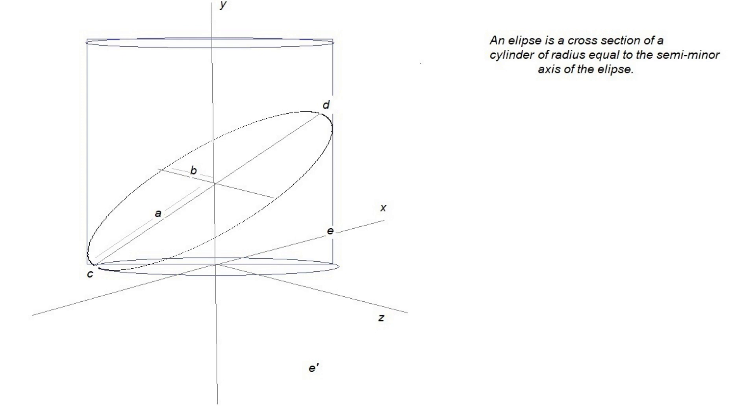An ellipse is a cross-section of a cylinder, of radius equal to the semi-minor axis of the ellipse.